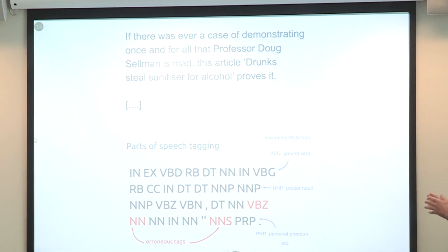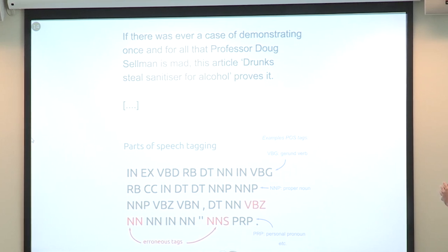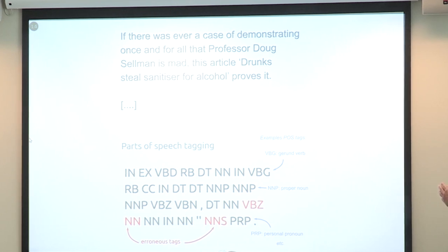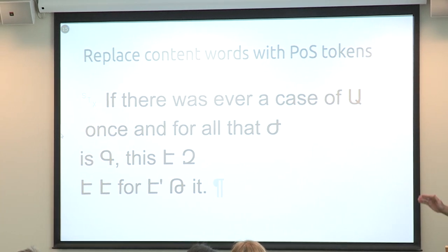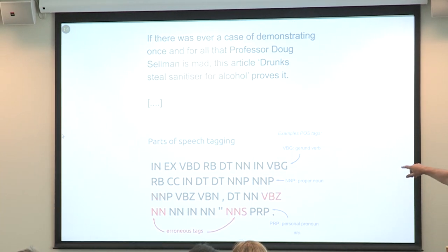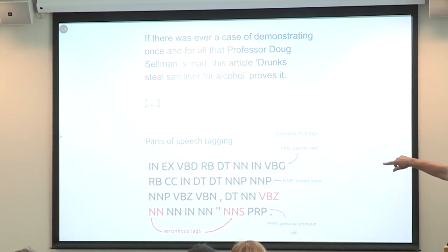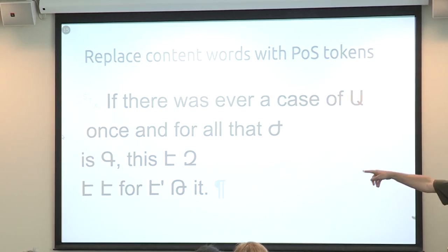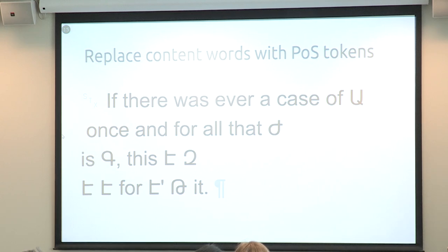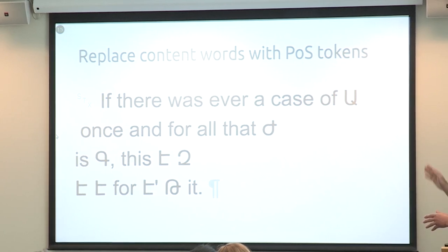And then if you look at the flow of the parts of speech, that is a characteristic of that writing style. You can also replace the content words — mainly the verbs, the nouns and especially the proper nouns — with little tokens. These are Armenian characters. There are strange technical reasons why they're Armenian characters. And then you look at the flow of this text, and you can read pages and pages of it and not know what they're talking about.